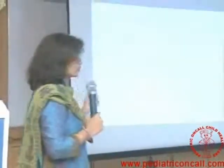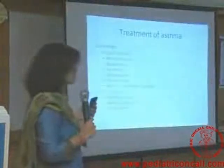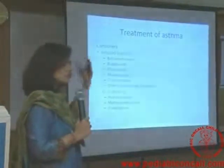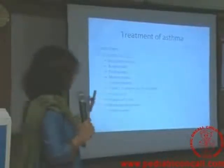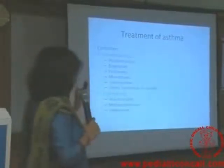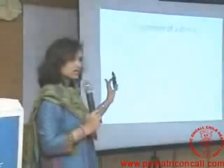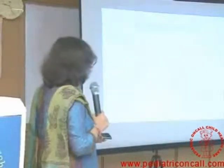Now, treatment of asthma — there are two medications: controllers and relievers. Your controllers are your brown colour medications, that is your steroids. Of your inhaler steroids, you have beclomethasone, budesonide, and fluticasone. Remember these three — these are the most commonly used in our country. The other ones like triamcinolone, cromolyn, and serevent are not so commonly used.